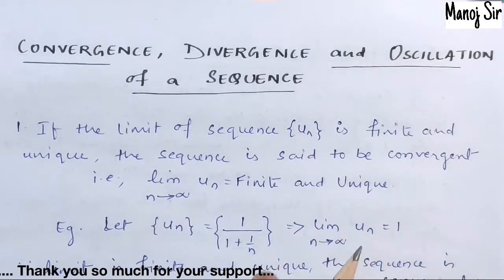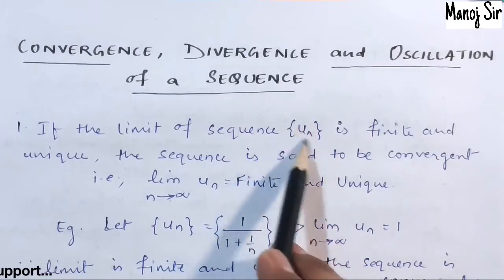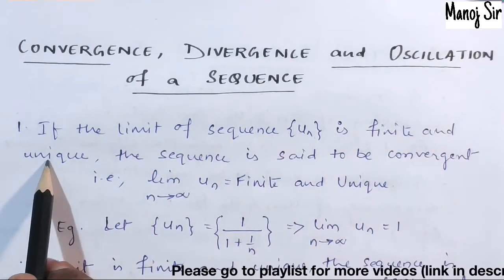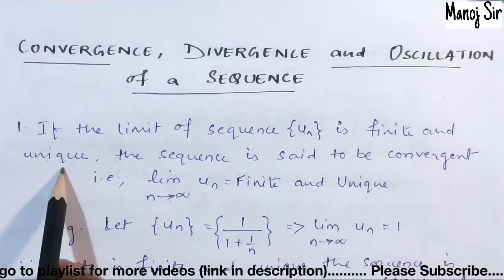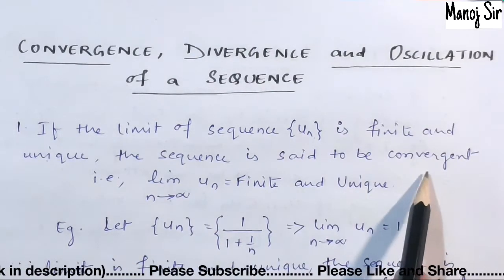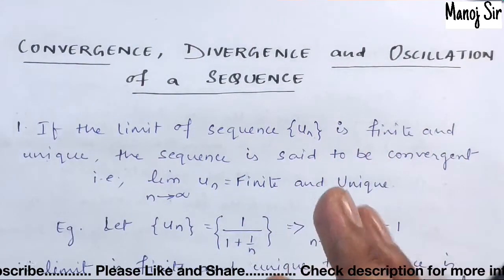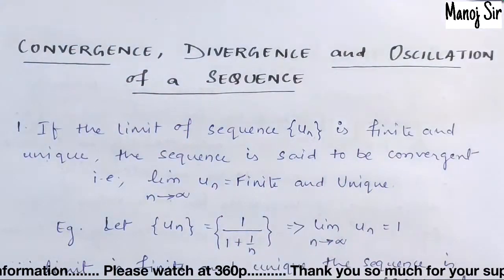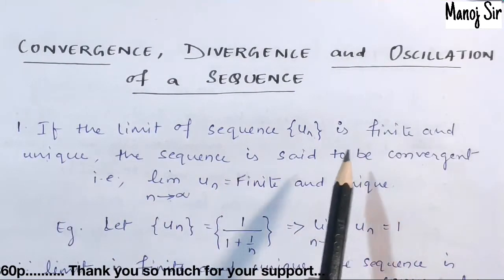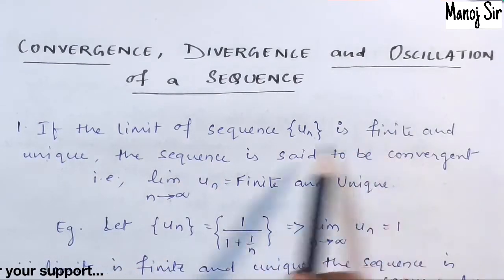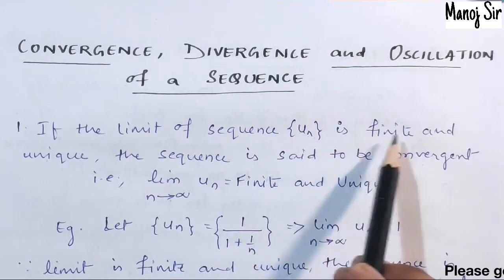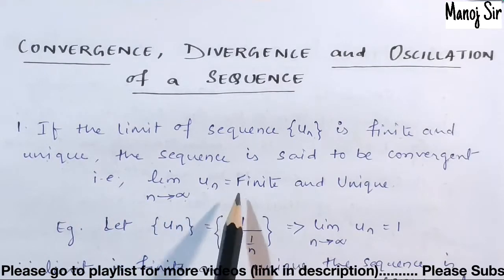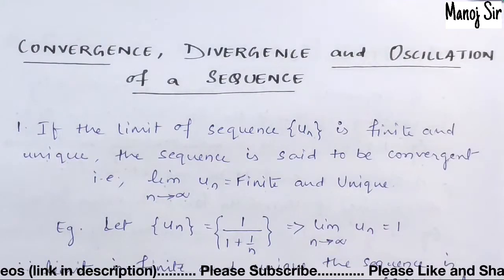First point: if the limit of a sequence UN is finite and unique, then the sequence is said to be convergent. Convergent means they are converging at a single point — that point is unique and finite. So the condition is: limit as N tends to infinity of UN must be finite and unique.